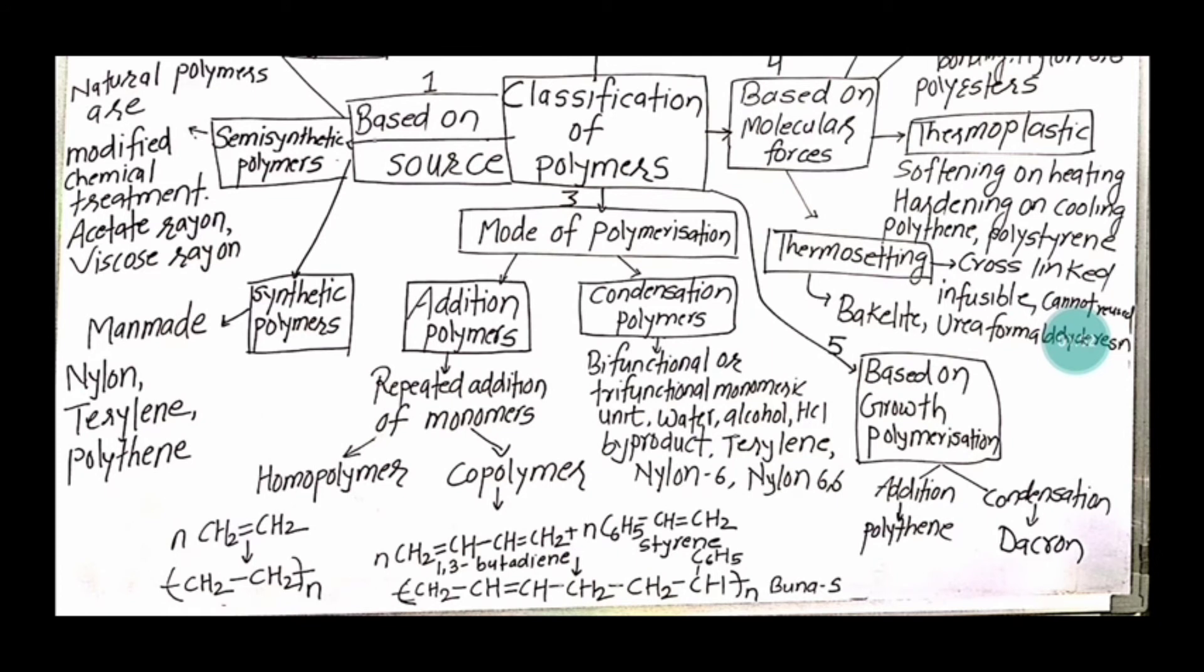Here we have addition polymers and condensation polymers. Let us talk about addition polymers. It has repeated addition of monomers. For example, we have homopolymer and copolymer. In homopolymer, same type of monomer gets polymerized and forms polymer. In copolymer, we have different monomer units get polymerized and form the polymer.